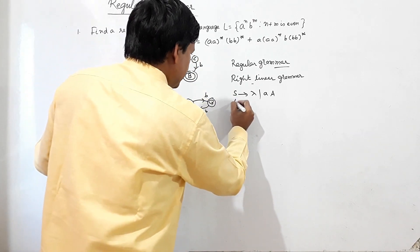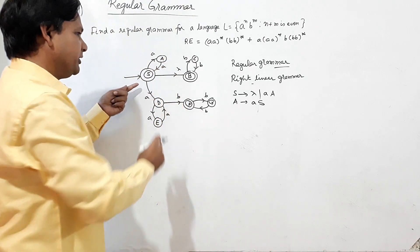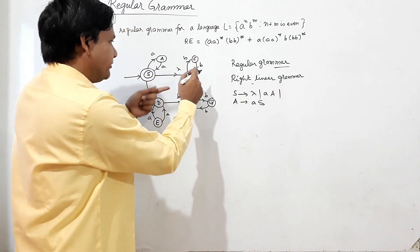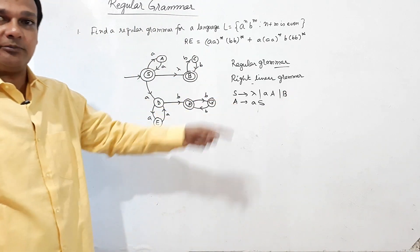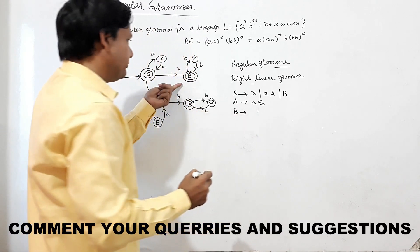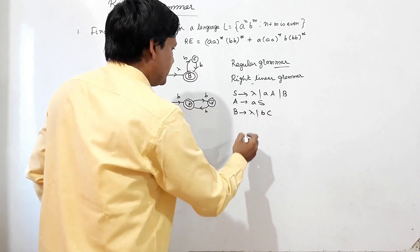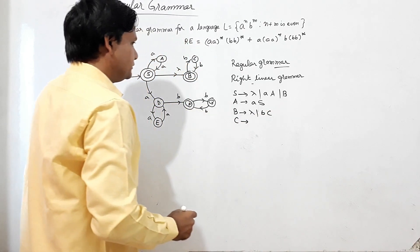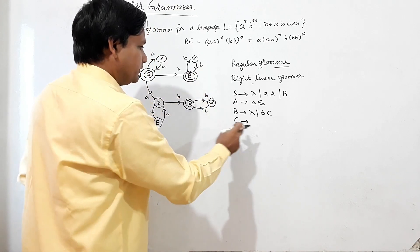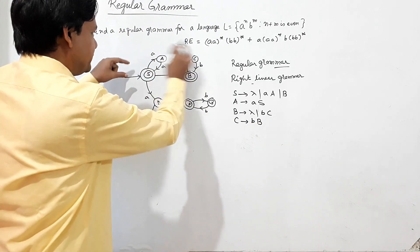From S, taking lambda on b, you can reach state B. Lambda means null here. In B, taking lambda it may terminate, or taking b it may reach C. On C, taking b it will reach back to B.